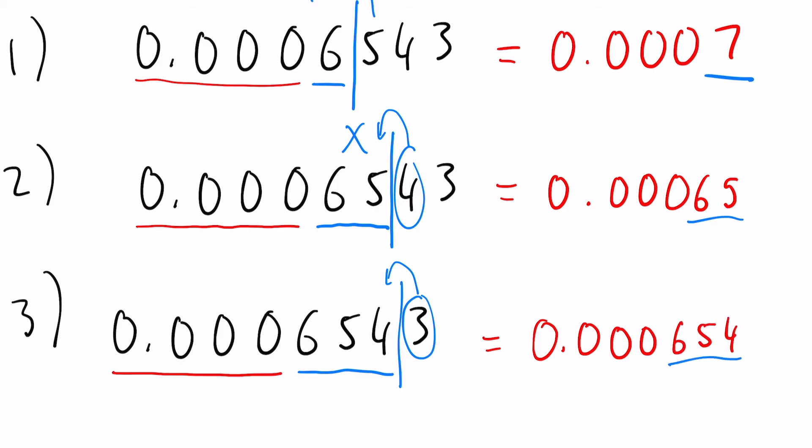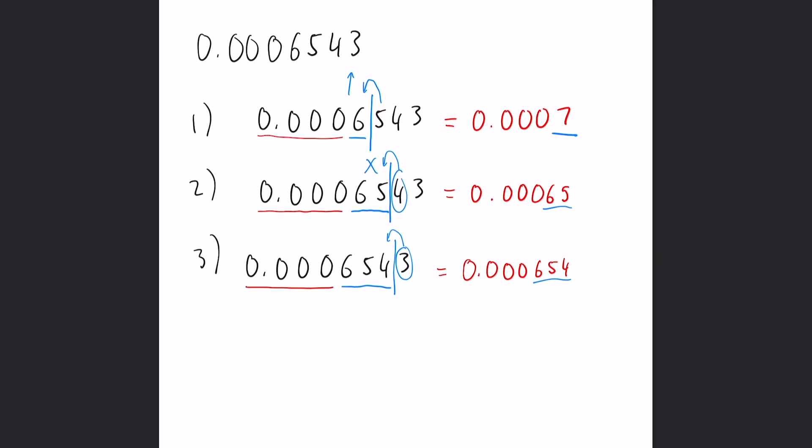Okay, now one really important tip with this. So let's look at the example 0.03050. What if I said I want to round that to three significant figures?